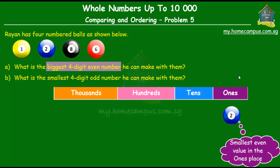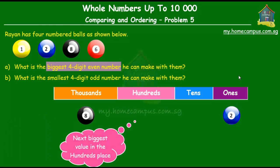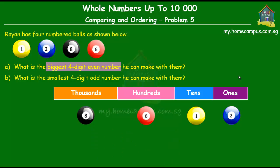Now from here we go as usual. We start with placing the biggest value in the thousands place. The balls that we have left are 1, 8, and 6, and out of them, 8 is obviously the biggest. So we put 8 in the thousands place, followed by the next biggest value in the hundreds place, and that's 6. And in the end, the ball that we have remaining is the number 1 ball, and that we put in the tens place. So the biggest four-digit even number that he can make with the four balls is 8,612.